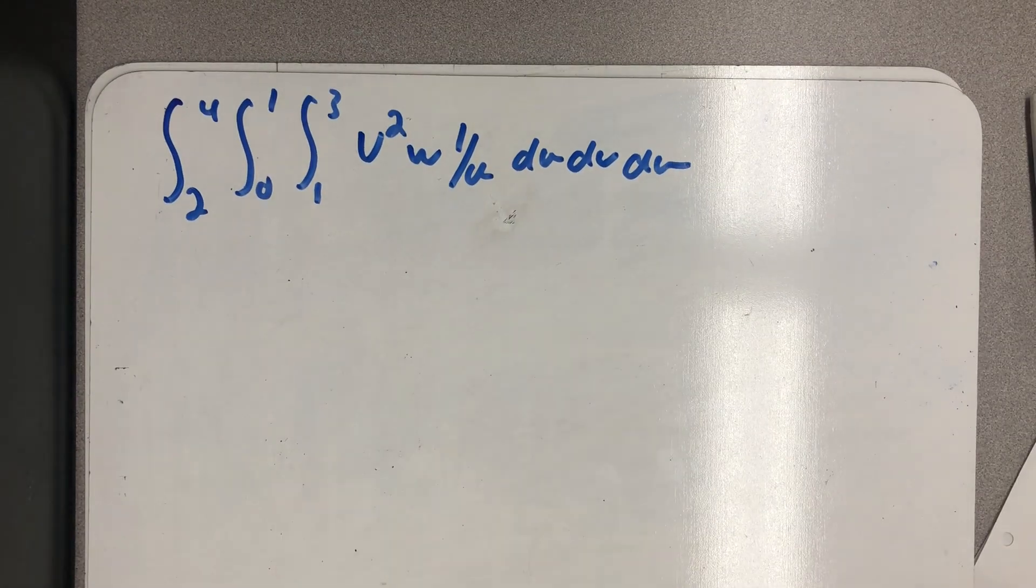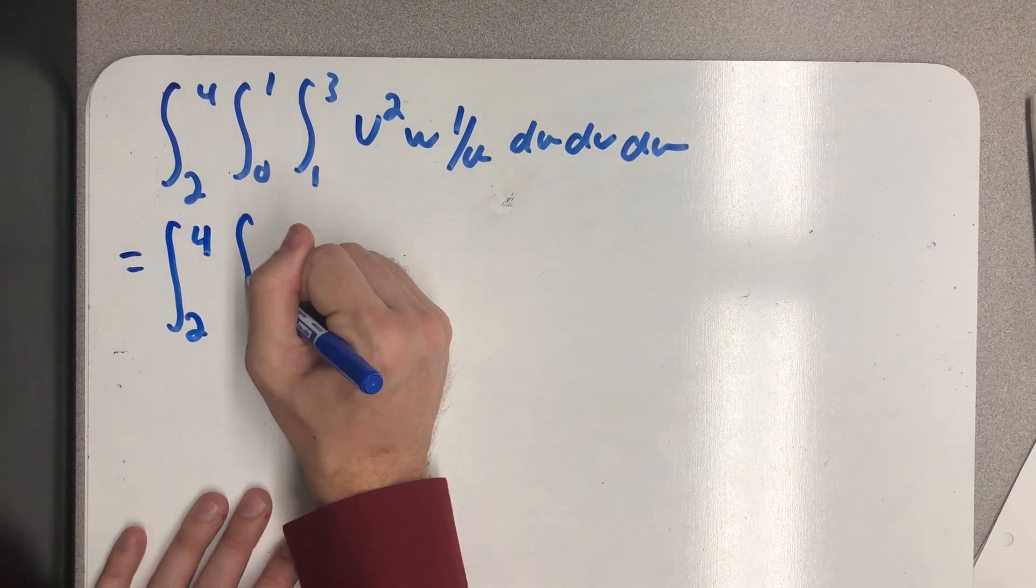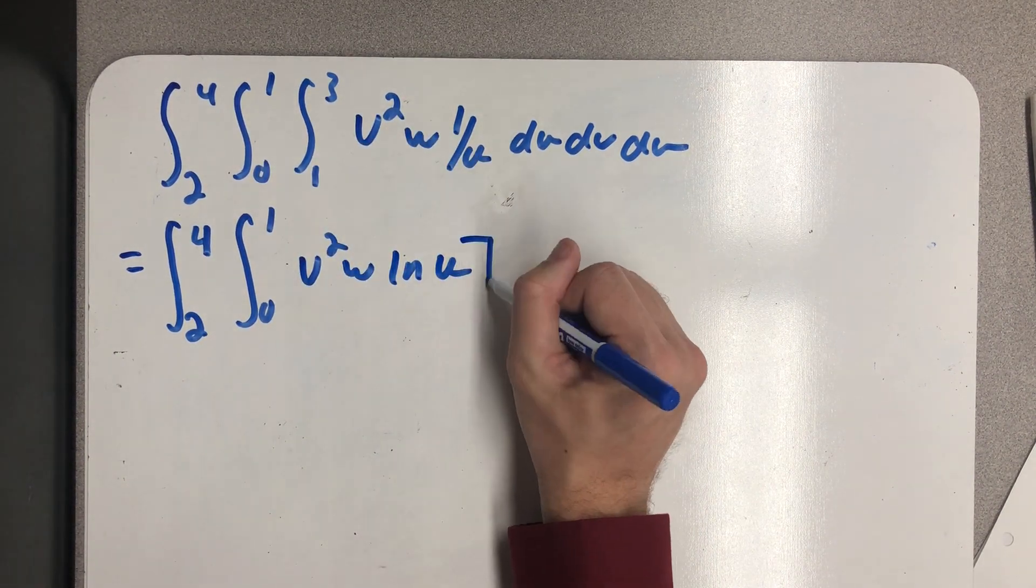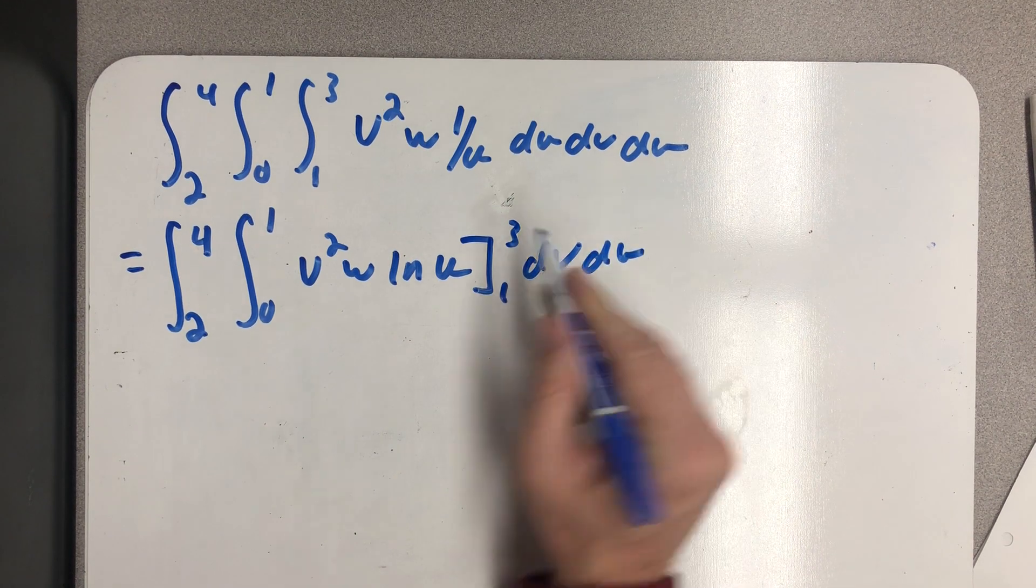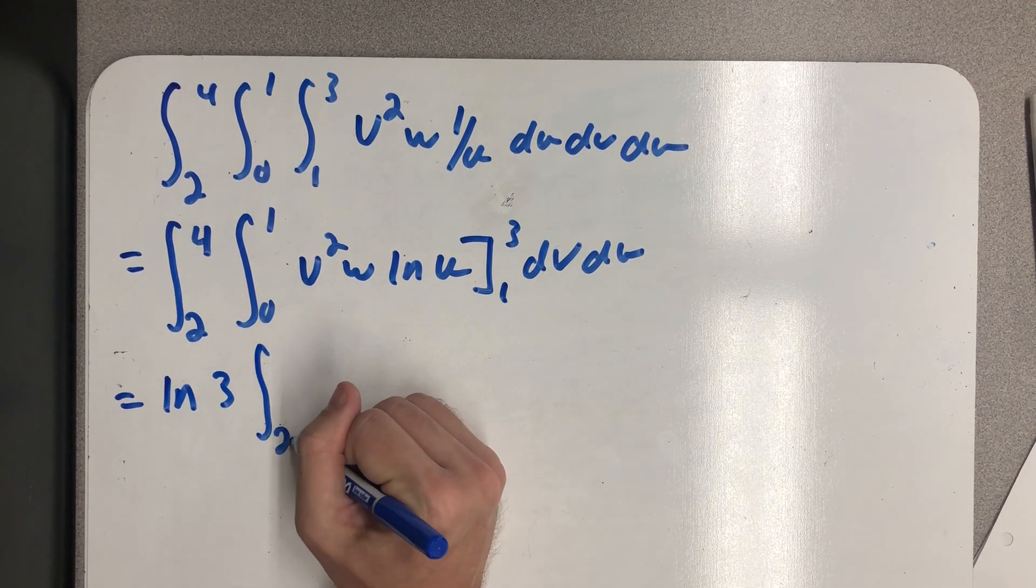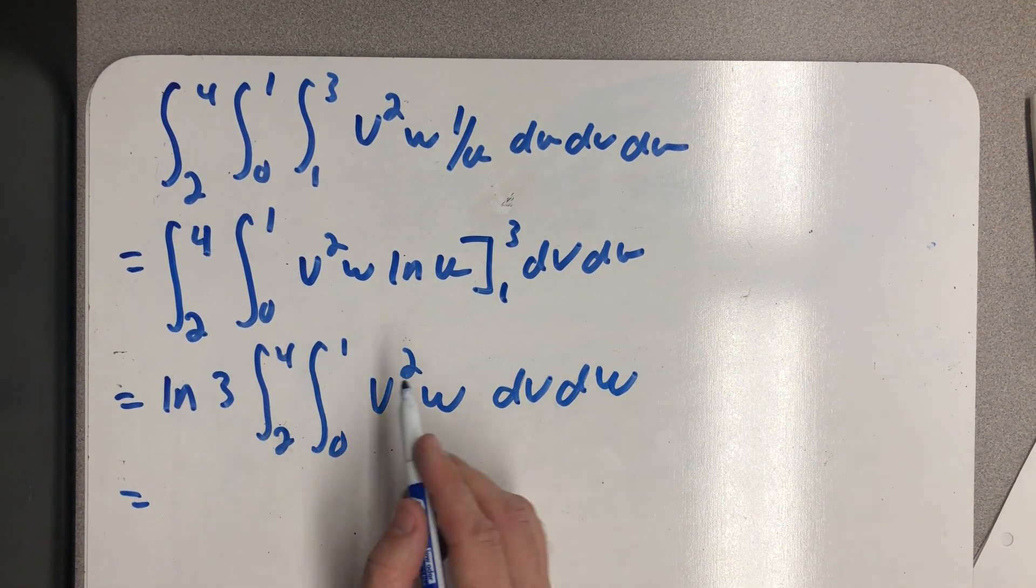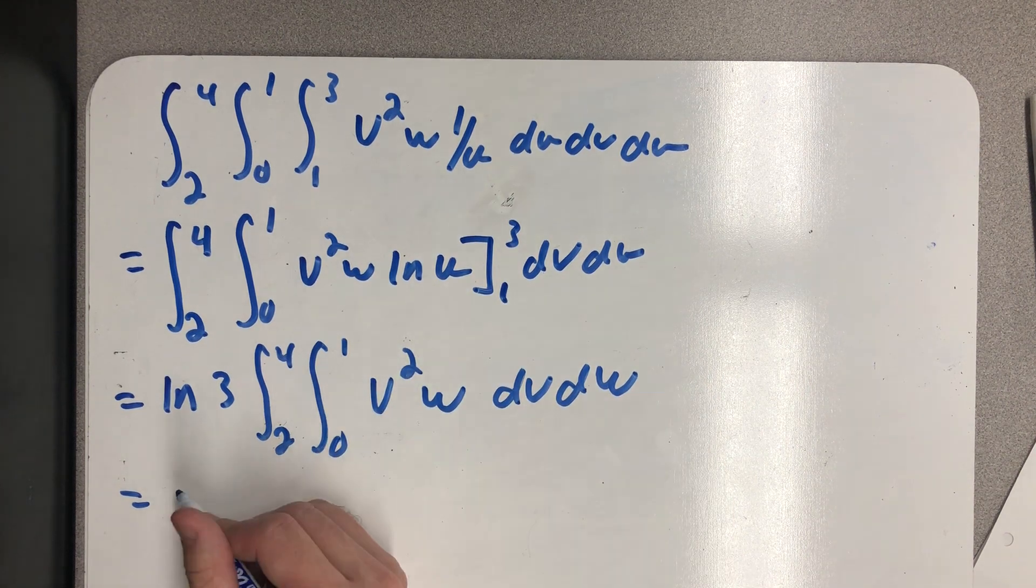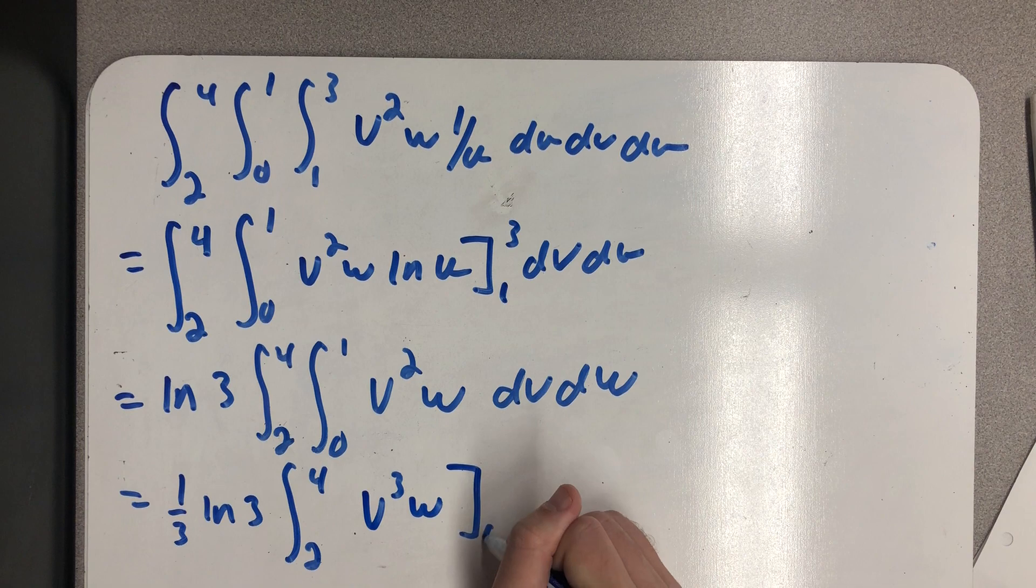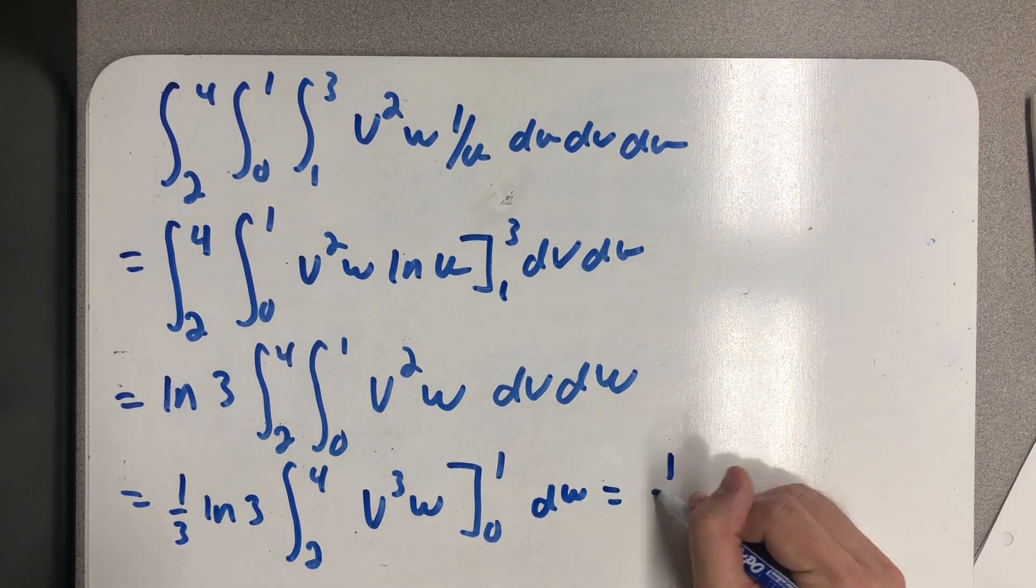All right, so I need an antiderivative for one over u, which is the natural log of the absolute value of u, but I know u's positive. So I'm just going to write a u there. I'd have the natural log of three minus the natural log of one, which is just the natural log of three. I'm going to go out and imagine that as a constant factored out front. All right, finding the antiderivative of v squared, I'm going to have a one-third v cubed. I'm going to go and write the one-third out front. And then from v equals zero to one. Well, if I plug that in, I'll just get a one with that one-third already out front. So now I have one-third the natural log of three.